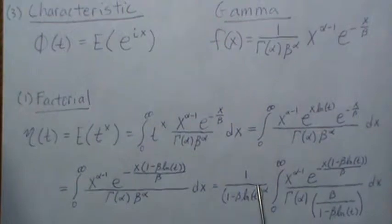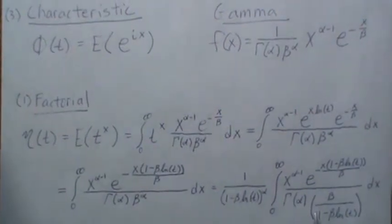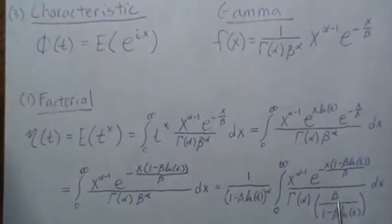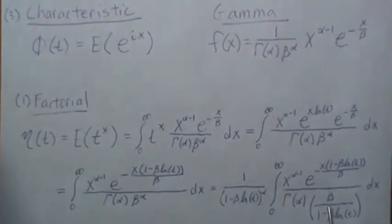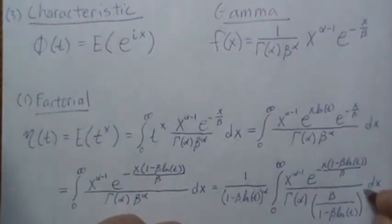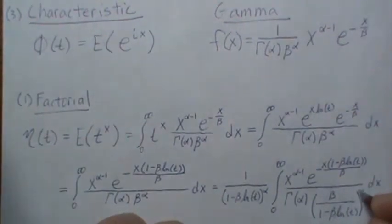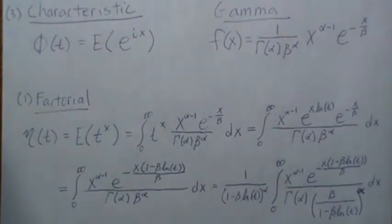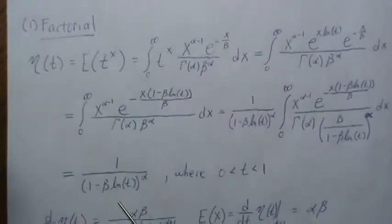So we multiply and then divide, or divide and multiply, depending upon how you look at it. So this is the new beta, and it's raised to the alpha there. And the reason you do that is this integrates to one, and we're left with just this.